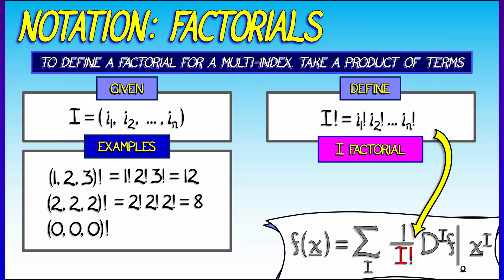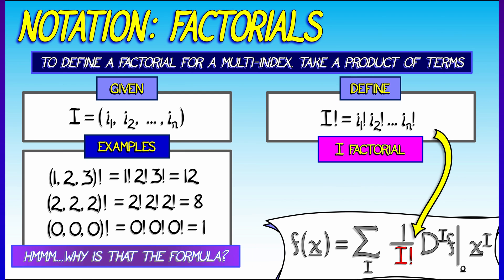And (0, 0, 0) factorial is, of course, remembering that 0 factorial is 1, equal to 1. And that is really the reason for why this multi-index factorial is this way. We definitely want 0 factorial to be equal to 1 in order to make the formulae work out nicely.